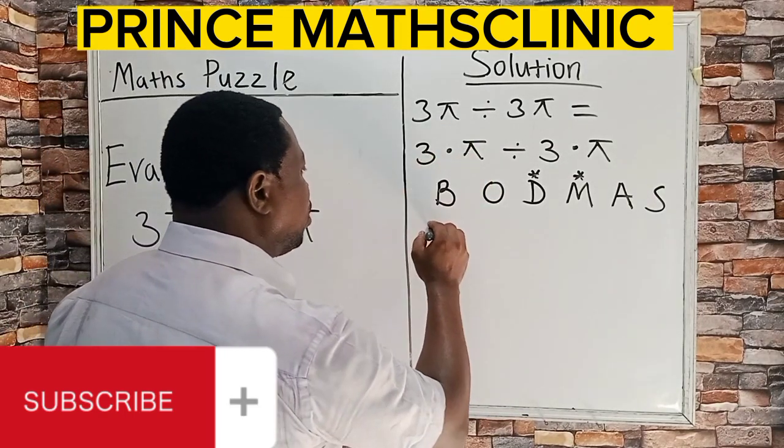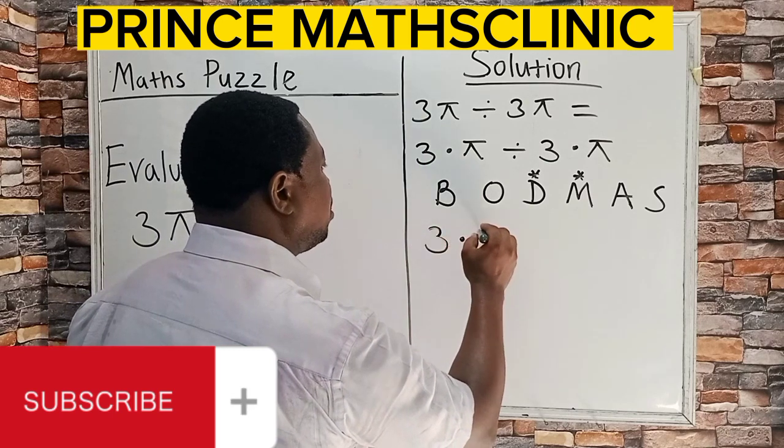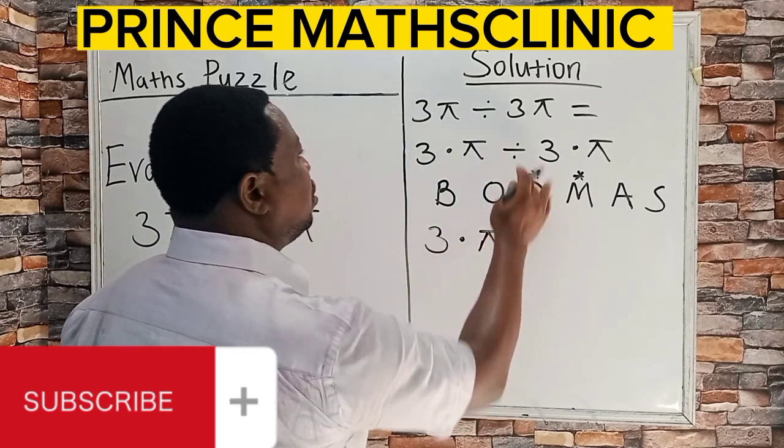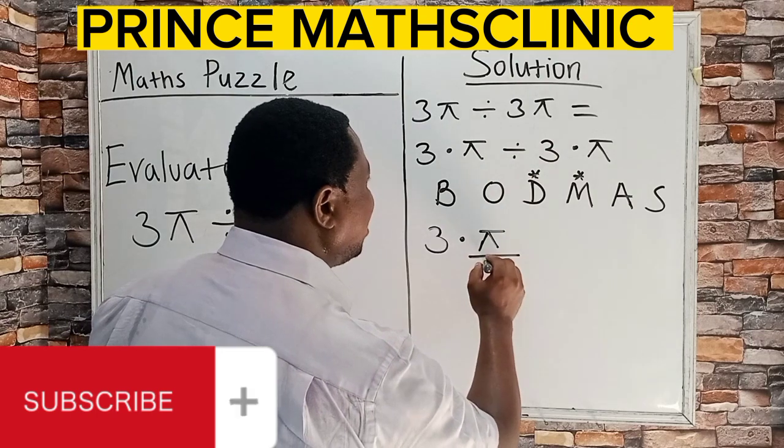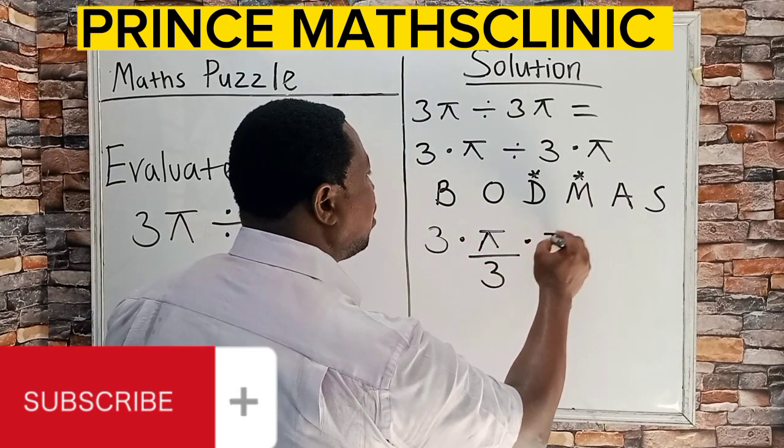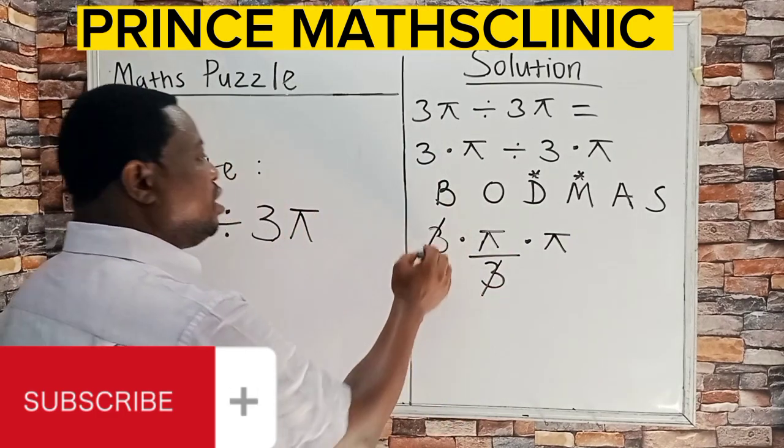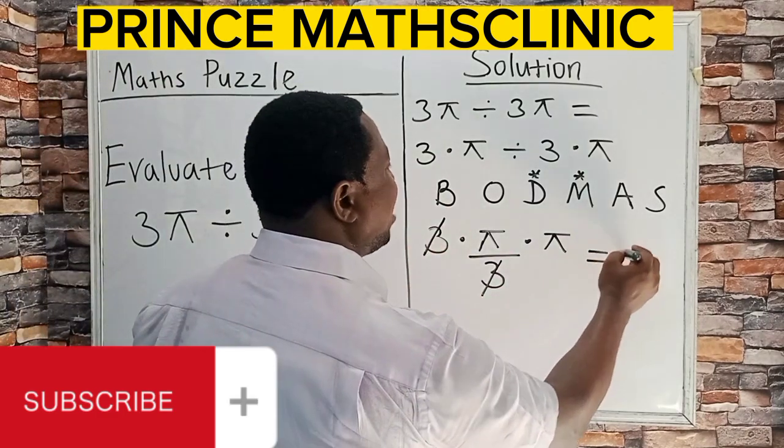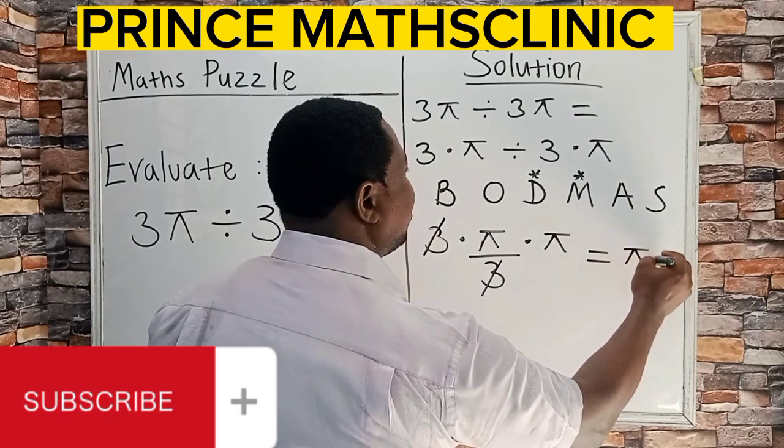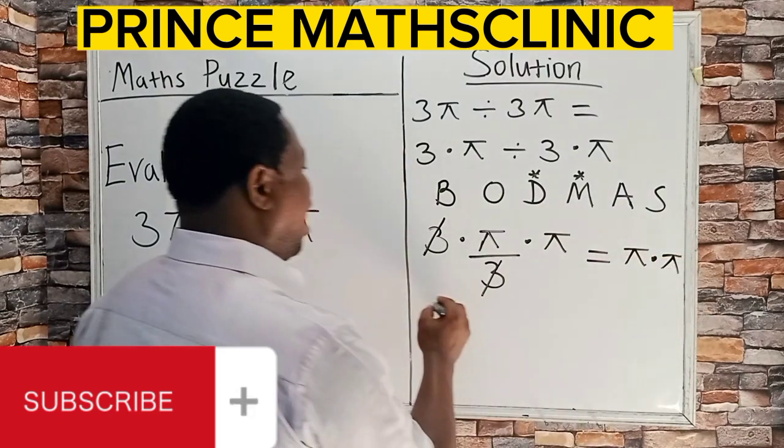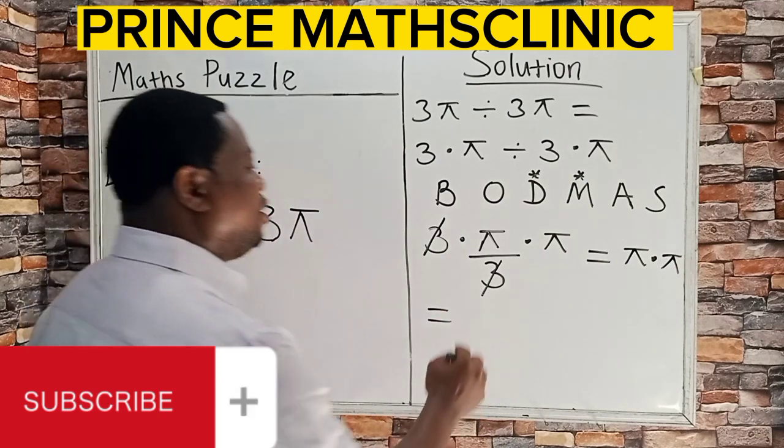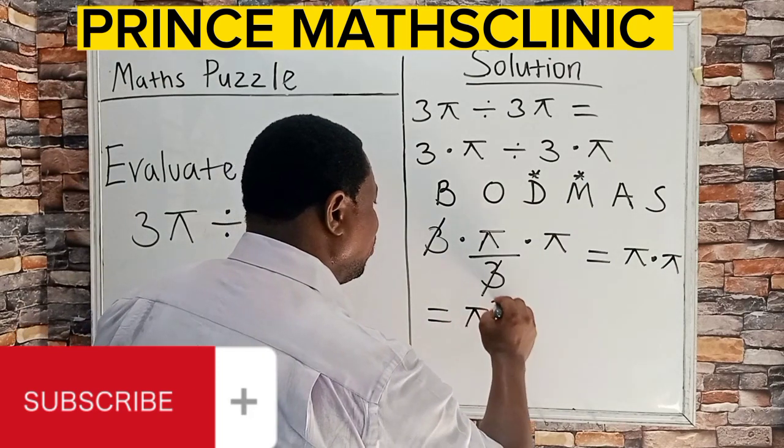This is 3 times π. Then this division, I am still going to write it like this, then multiply by π. 3 cancels on 3. So I have π multiplied by π, and π multiplied by π is the same thing as π squared.